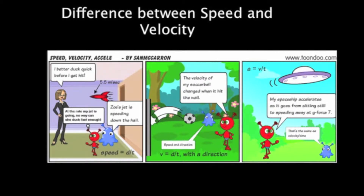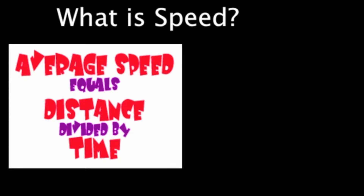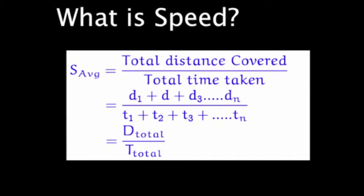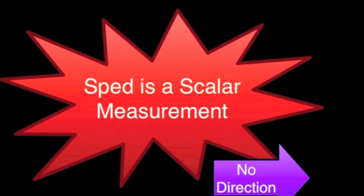In this section, we will be talking about the difference between speed and velocity. Speed is the total distance divided by the total time. Speed is a scalar measurement — it has no direction.